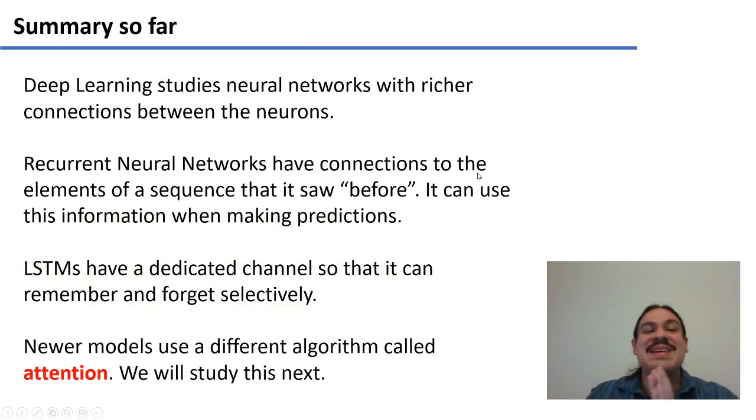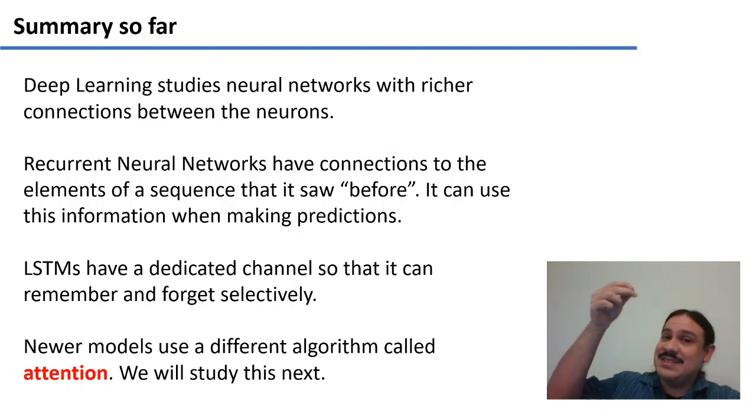So what do we have so far? Deep learning studies neural networks with richer connections between neurons, not just many connections, but richer ones, as we have seen here, where you don't just do a prediction between layers, but also feed information into a future neural network. This is what recurrent neural networks do. They have connections to elements they have seen before, so they can use this information when they make predictions. Unfortunately, the information from previous iterations can vanish. This is the vanishing gradient, because it stays further and further back in time. There's many solutions to this. One is the long short-term memory neural networks, which have a dedicated channel, so you can select what to remember and what to forget as you go. The state-of-the-art right now uses an algorithm called attention, which we will study next.